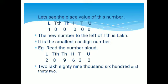Now students, let us see the place value of this number. Unit 0, tens 0, hundreds 0, thousands 0, ten-thousands 0, and the new place to the left is 1,00,000. So the place value of 1 is 1,00,000. It is the smallest 6-digit number.